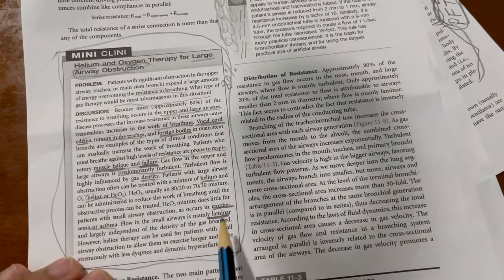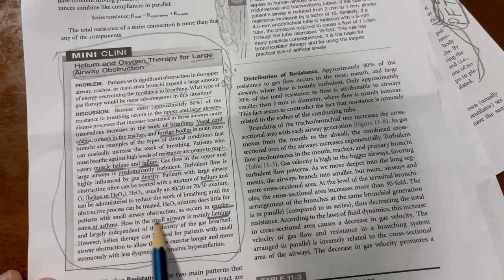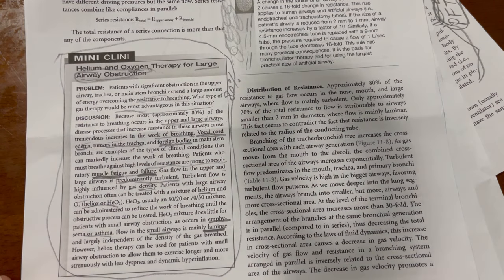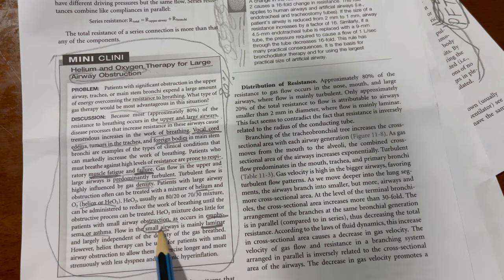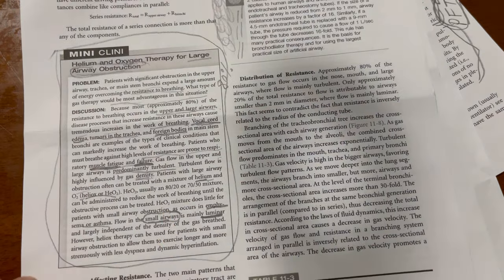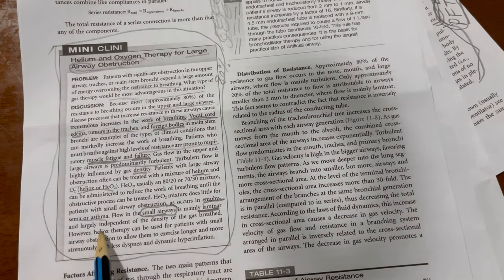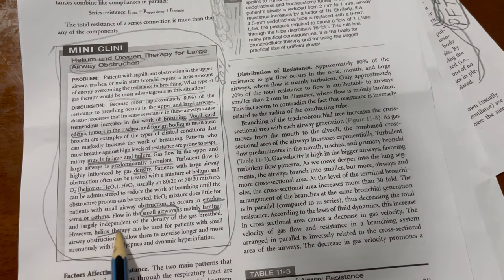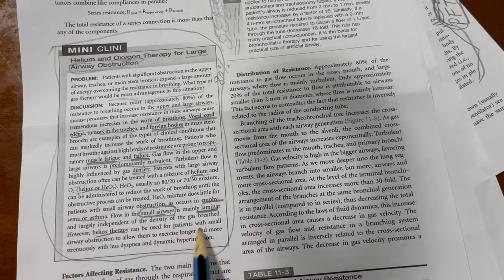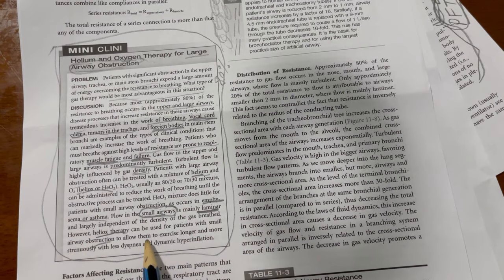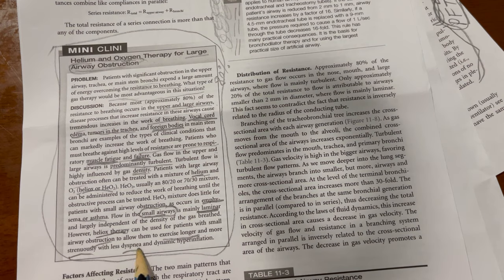Flow in the small airways is mainly laminar. Laminar flow will always be found in the small airways, and this is a common test question. Small airway flow is largely independent of gas density. However, heliox therapy can be used for patients with small airway obstruction to allow them to exercise longer and more strenuously with less dyspnea and dynamic hyperinflation.